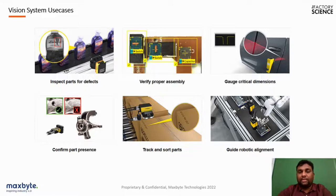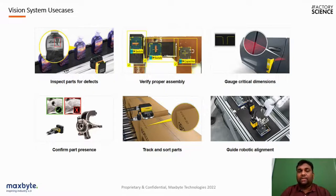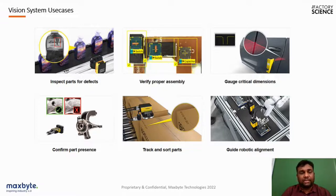Parts can be accepted or rejected based on inspection results. Tracking and sorting of parts can also be done — when multiple products run in a line, parts can be segregated by color, size, or physical properties. Additionally, guided robotic alignment allows the camera inspection system to work coordinately with a robotic arm, guiding it to move to a specific area, enabling complete automation. There are multiple use cases for camera-based inspection, and based on requirements, specific cameras and use cases can be selected and implemented.